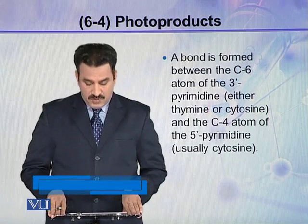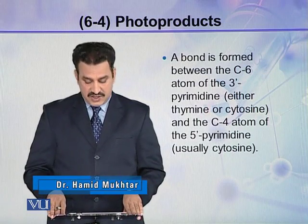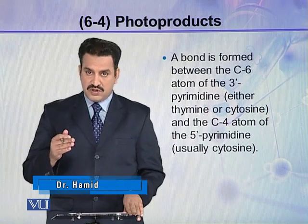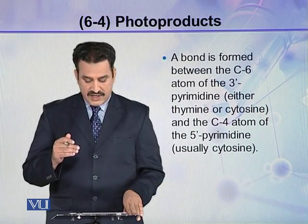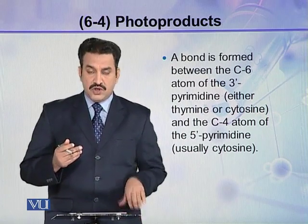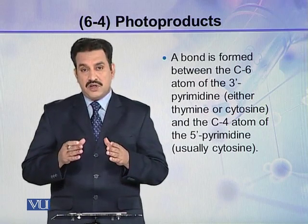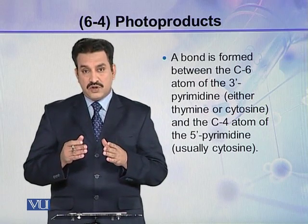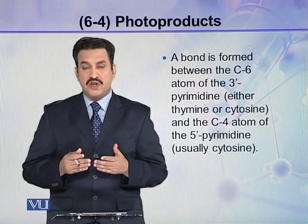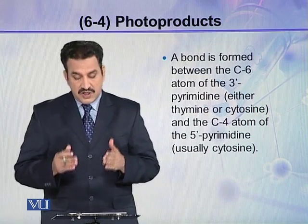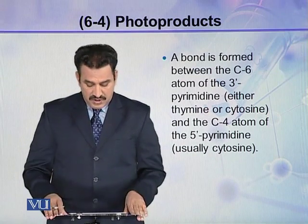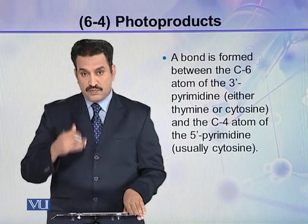A bond is formed between the C6 atom of the 3-prime pyrimidine (which may be thymine or cytosine) and the C4 atom of the 5-prime pyrimidine (which is usually cytosine). Unlike CPD, where bonds form between C5 and C5 or C6 and C6, here the bond forms between C4 and C6 of two pyrimidines.